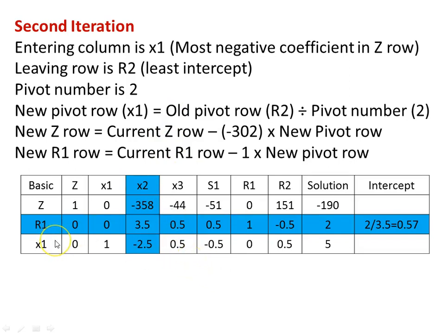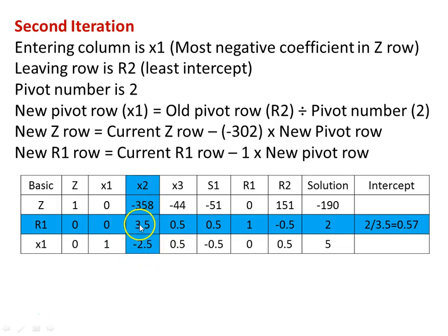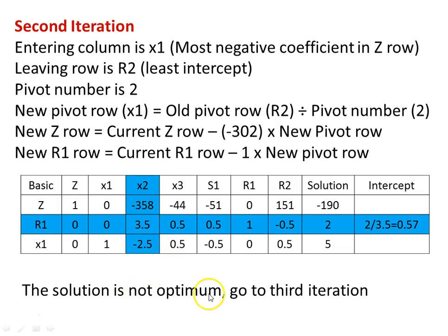Using these equations, we calculate the new table and obtain the new solution. Looking at the z-row of the non-basic variables: x1 is 0, x2 is −358, x3 is −44, s1 is −51. Since it is a maximization problem, −358 is the most negative value, so x2 is entering. When x2 is entering, the denominator in the r2 row is negative, so we cannot consider that row for the intercept. The intercept from r1 is 2 divided by 3.5, so r1 is the leaving variable and 3.5 is the pivot number. The solution is not optimum; proceed to the third iteration.